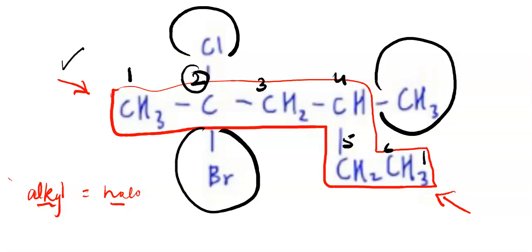So now numbering - naming of the compound. First of all, name the parent chain. What is the parent chain? Consisting of 6 carbons. So we name this parent chain hexane.